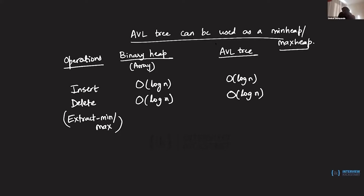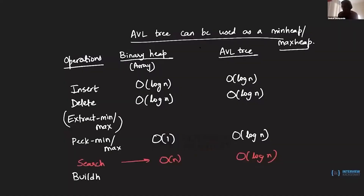If we just wanted extract min/max and peeking, we need not go for an AVL tree. Peeking at the min or max in a heap takes O(1) time; in an AVL tree you have to go down the entire height of the tree in the worst case, which is O(log n). Build heap is something we can do in O(n) time using an array-based implementation — that analysis was covered in the sorting foundations. The question is: can we build an AVL tree in O(n) time?